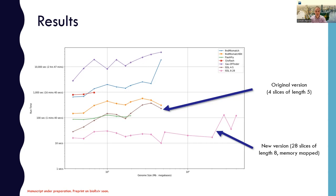Looking at some results, what we have here is the time it takes to extract the neighborhood and calculate the scores for 10 guide RNAs in genomes of increasing size. We're comparing our neighborhood extraction method, called SSL, with other leading methods for off-target scoring. You can see in orange the original version of our method with four slices of length five, and in pink we have our new method with the longer slices and the memory-mapped implementation that can achieve another order of magnitude speedup compared to existing methods.